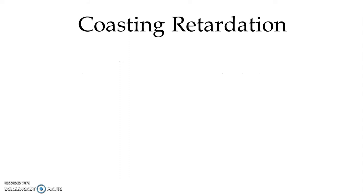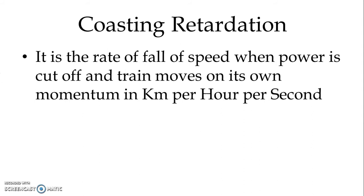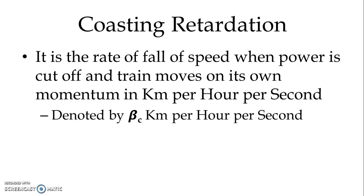Another term is coasting retardation. It is also a rate of fall of speed, but it occurs when power is cut off and the train moves on its own momentum. In the case of retardation we apply the brakes, but in coasting retardation, when power is cut off, the train moves a certain distance on its own momentum. It is denoted by beta suffix C and measured in kilometers per hour per second.